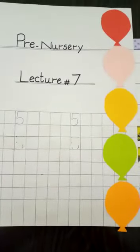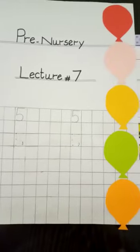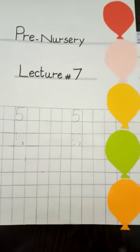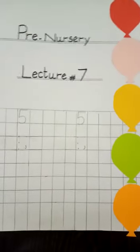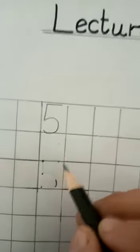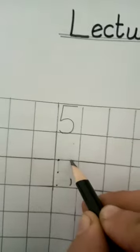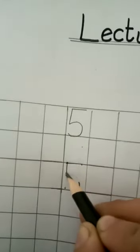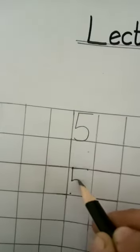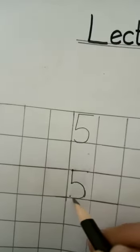Assalamualaikum students, today is lecture number 7. Today we learn how to write number 5. For writing number 5, we need a sleeping line, a standing line, and a curve to the bottom.